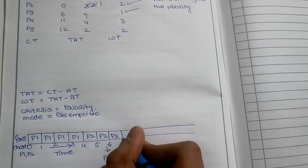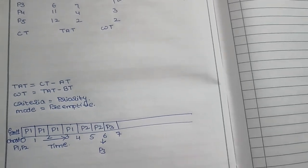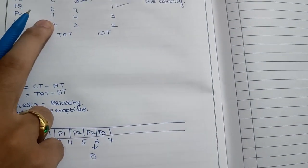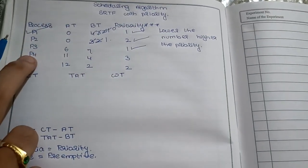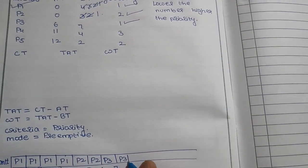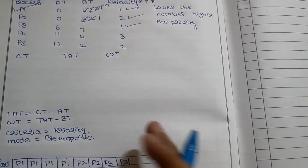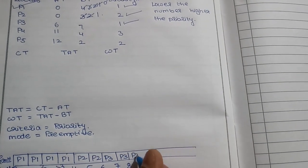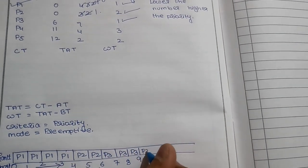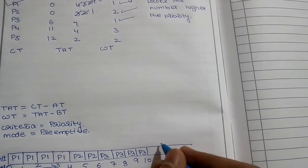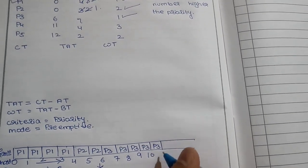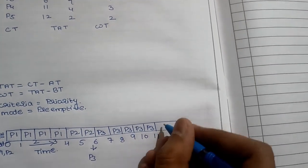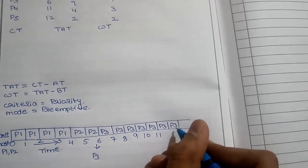So I assign the job to P3. Looking at the next arrivals — P4 arrives at 11 and P5 at 12. Even when they arrive, P3 cannot be pre-empted because P3 has the highest priority. All other processes — P2, P4, P5 — cannot run because P3's priority is the highest. P3 has an overall burst time of 7.